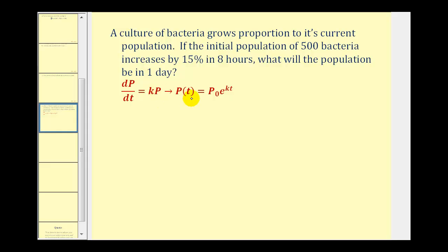We now know this has a general solution of P of t equals P sub zero times e raised to the power of kt. So if the initial population of 500 bacteria increases by 15% in eight hours, what will the population be in one day?